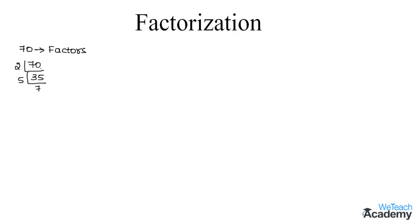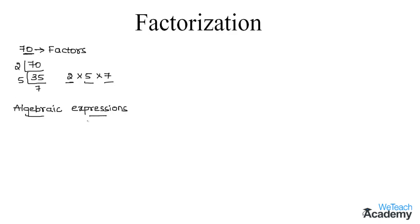Therefore we can write the number 70 as 2 × 5 × 7. The numbers 2, 5, and 7 are called the factors of the number 70. Now, how will you find the factors of an algebraic expression? In this section we are going to learn about how to find the factors of algebraic expressions.